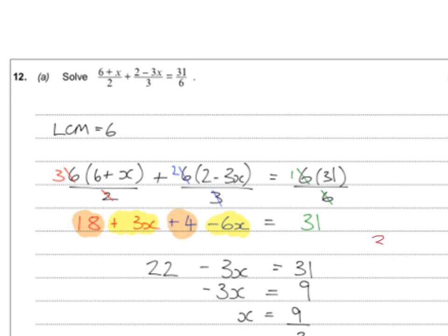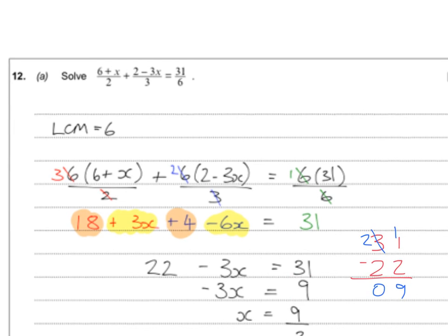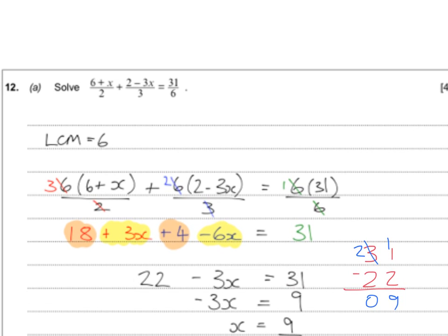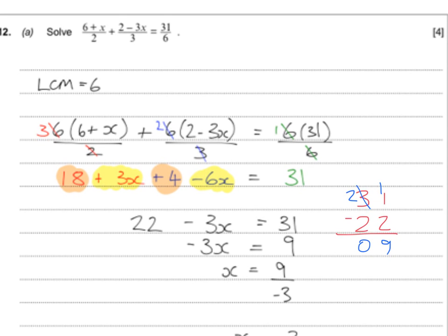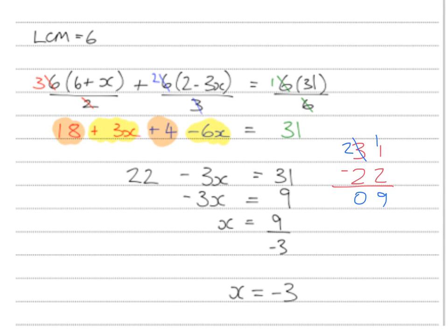Taking the 22 over gives minus 3x equals 9 — be careful, 31 take away 22 is definitely 9. Minus 3x equals 9; take the minus 3 over to the other side as divide by minus 3. Nine divided by minus 3 — lots of people actually just left it as that and as far as I'm concerned that's correct. You can cancel it down: it cancels very nicely to minus 3.